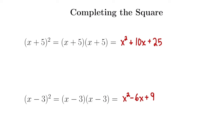What do we notice about both of these perfect square trinomials? If you take half the coefficient of x and then square it, you get the number on the end. So up here, the coefficient of x is 10, so we take half of 10, which is 5, and then square it, and we get 25. Same thing down here: take half of negative 6, which is negative 3, and then square it, and we get 9. And notice that it's plus 9.